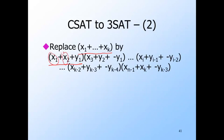We're going to replace the clause x1 through xk by k minus two clauses. The first consists of the first two literals x1 and x2, and the first new variable y1 unnegated. The second has only one original literal x3, and two variables: the previous variable y1 negated, and the next variable y2 unnegated. That pattern repeats — each new clause has one of the original literals, a negated previous y, and an unnegated next y. Then finally, the last of the new clauses has the last two original literals, and only the previous y negated. If k is less than or equal to three, no new variables are introduced.